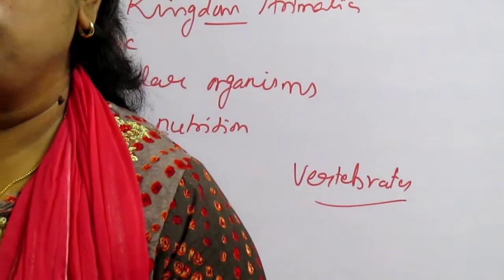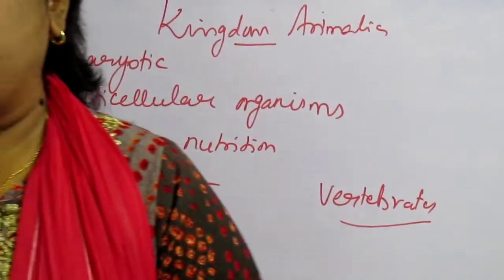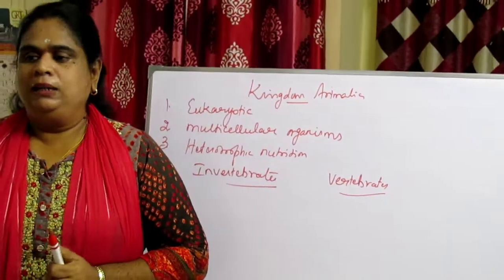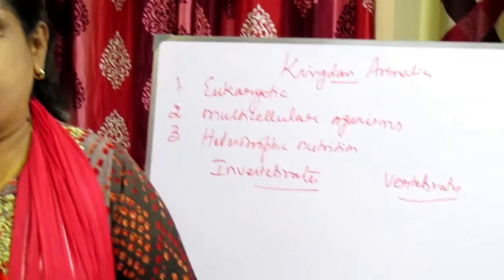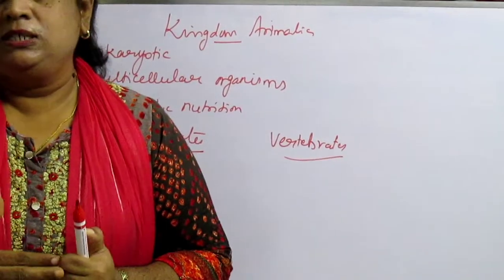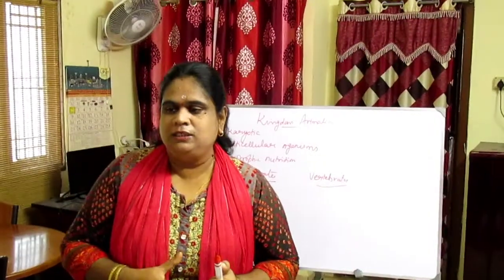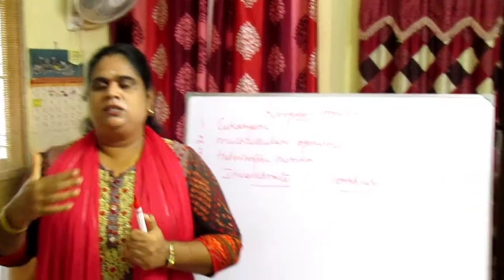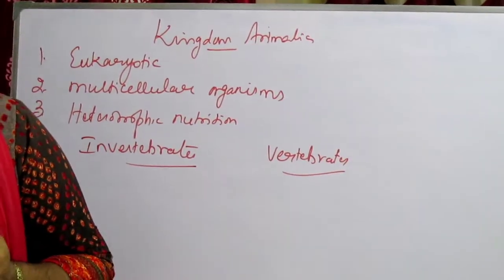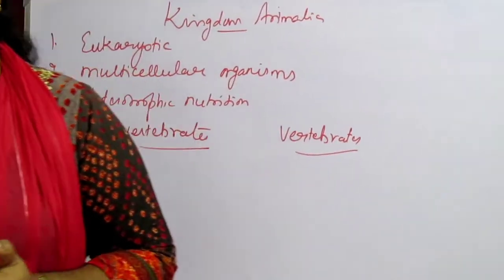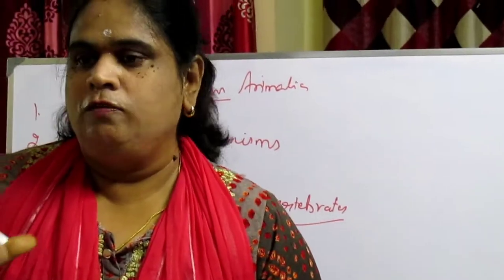Now we will see the basis of classification. Multicellular organisms are structurally and functionally different, but they possess certain common fundamental features such as arrangement of cell layers, levels of organization, the nature of coelom, the presence or absence of segmentation, notochord, and the organization of the organ system. These are the basis of classification.